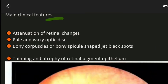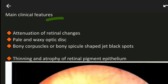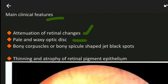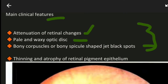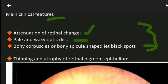It is a primary pigmentary retinal dystrophy. Three main clinical features include: attenuation of the retinal arteries, pale and waxy optic disc, and bony corpuscle or bony spicule shaped jet black spots. Even a single bony corpuscle or bony spicule shaped jet black spot indicates retinitis pigmentosa.